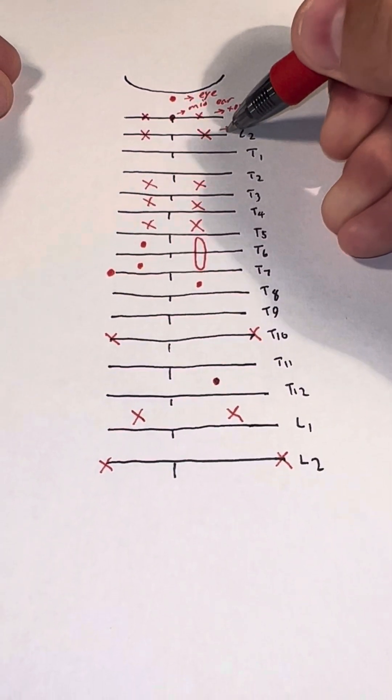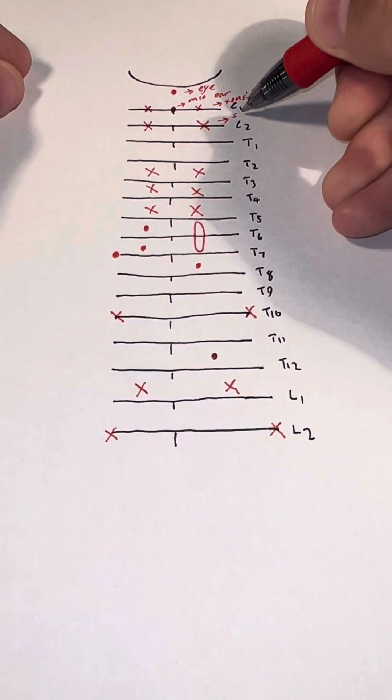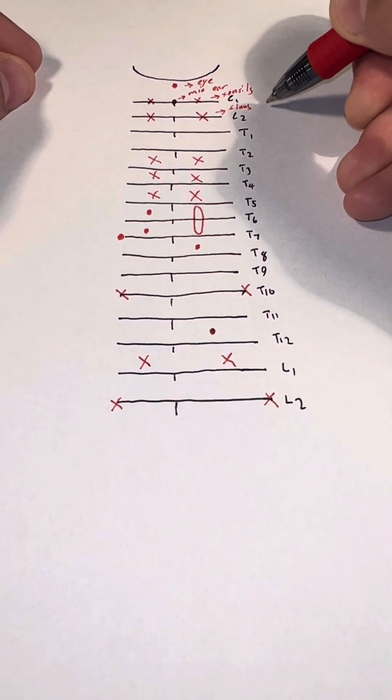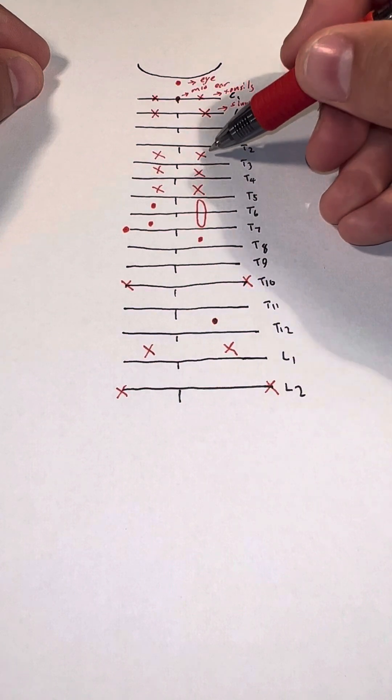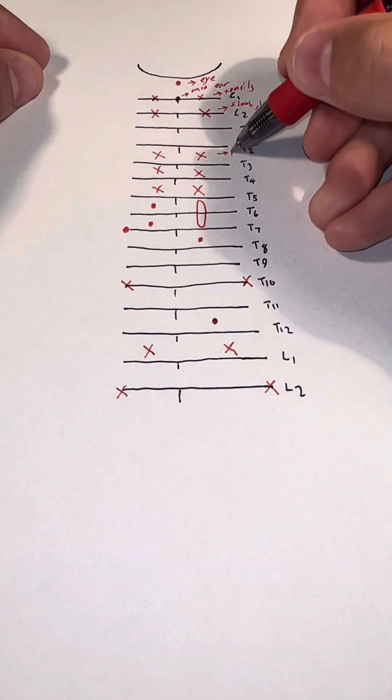Moving down to C2, this is your sinus, larynx, and pharynx. We have a pretty big gap between T2 and T3. This represents the heart.